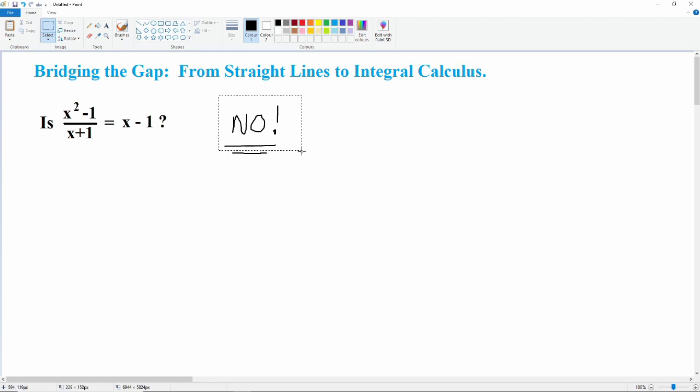So why not? Well, let's consider what happens when x is equal to negative 1. Let's just plug that number in. Negative 1 squared minus 1 divided by negative 1 plus 1 is equal to negative 1 minus 1.